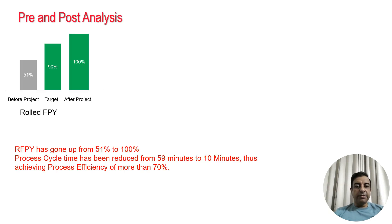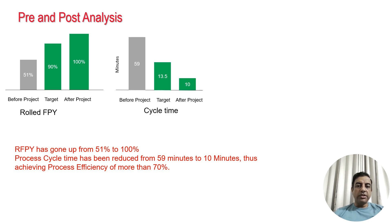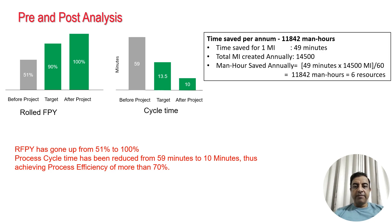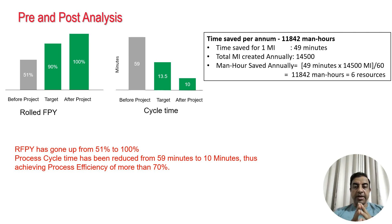In the pre-post analysis, the first pass yield improved from 51% to 100%, and the overall cycle time reduced from 59 minutes to 10 minutes, against a goal of 13.5 minutes — a process efficiency gain of more than 70%. The total time saved per annum from this project is 11,842 man-hours. This was calculated as follows: the time saved per manual invoice was 49 minutes, with 14,500 manual invoices created annually, yielding 11,842 man-hours saved per year, equivalent to 6.5 resources.